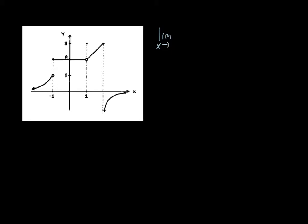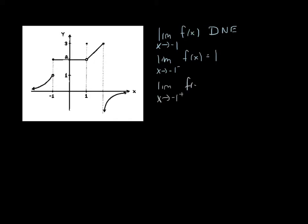Here's another graph to consider. Let's take a look at what's happening at x equals negative 1. At x equals negative 1, we have a jump happening here, so we can tell that this limit does not exist. But we can talk about the limit as x approaches negative 1 from the left — from the left, our function is approaching positive 1 — and from the right, f of x is approaching 2.